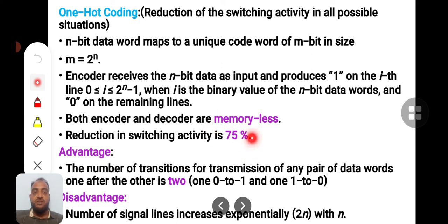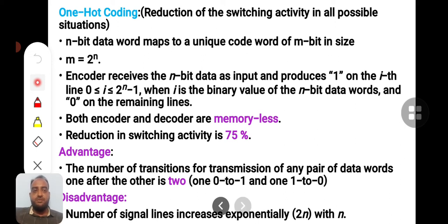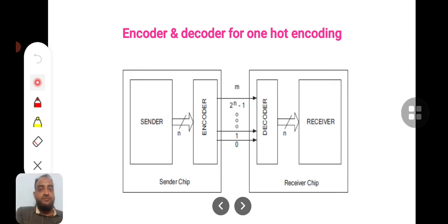The switching activity reduction is by 75%. For any pair of data words, you can see only 1-to-0 and 0-to-1 transitions. For example, if at time t you are transmitting number 8, the 8th line will be high. In the next consecutive time slot you transmit number 9 — you reset the 8th line and set the 9th line — so only 2 transitions are taking place. The disadvantage is that the number of lines increases exponentially as 2^n, making the system expensive relative to the power-saving benefit.